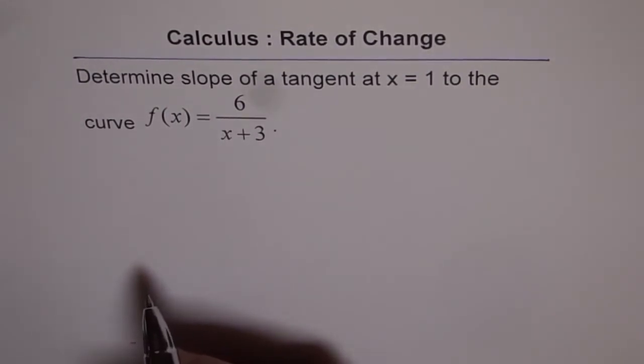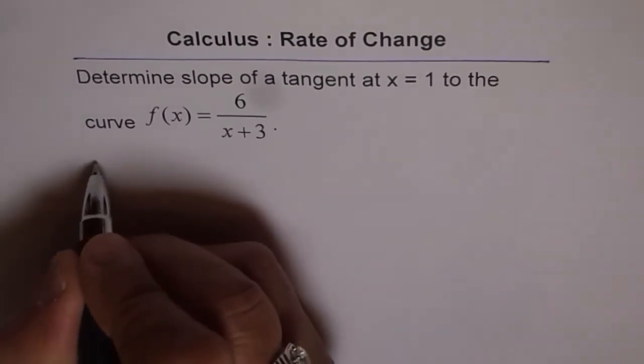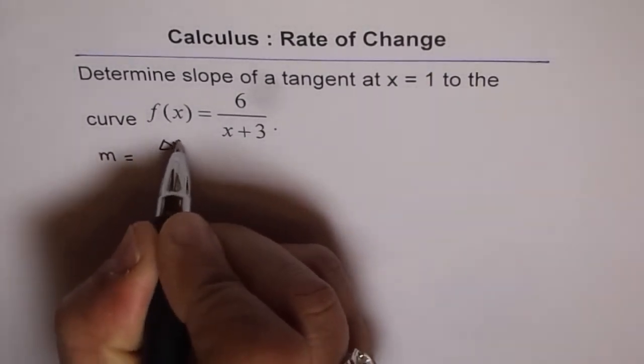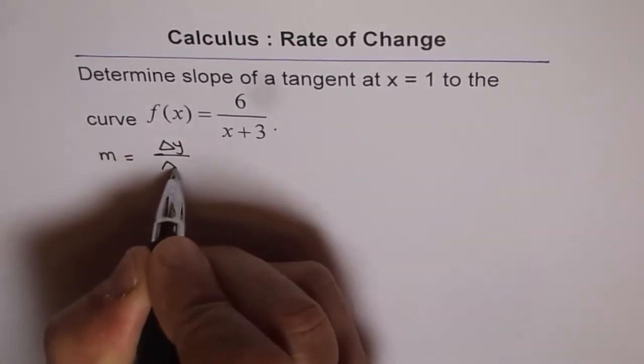Going back with our definition of slope, we need to find change in y over change in x. So, as you know, slope equals change in y over change in x.